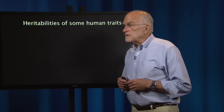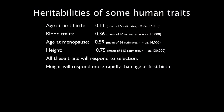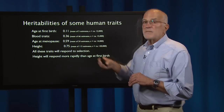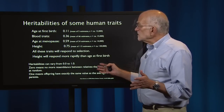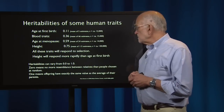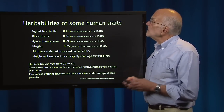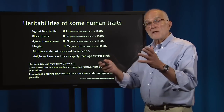Here are the heritabilities of some human traits: age at first birth, 0.11; blood traits like cholesterol, around 0.3 to 0.4; age at menopause, about 0.6; height, about 0.75. All of these traits are capable of responding to selection, but height will respond more rapidly than age at first birth because its heritability is higher. Heritabilities range from 0 to 1 — 0 means no more resemblance between relatives than between people chosen at random, and 1 means offspring have exactly the same value as the average of their parents. Human traits have significant genetic variation and can respond to selection.